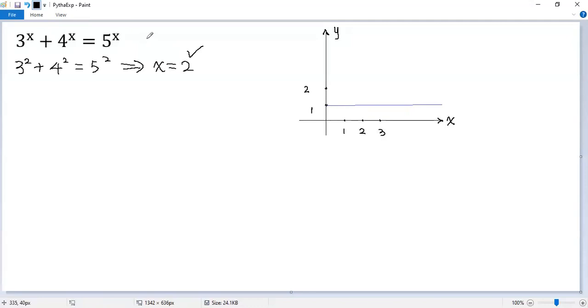But does it have other solutions? To answer this question, divide both sides by 5 to the power of x. So we get 3 to the power of x divided by 5 to the power of x, plus 4 to the power of x divided by 5 to the power of x, equals 1.